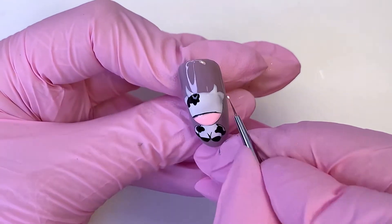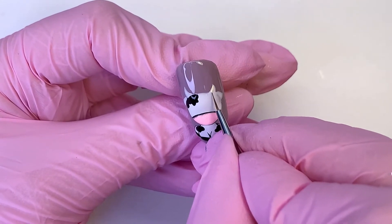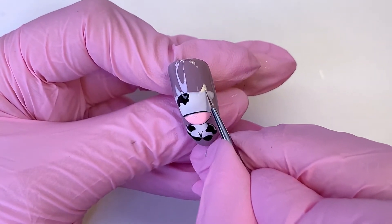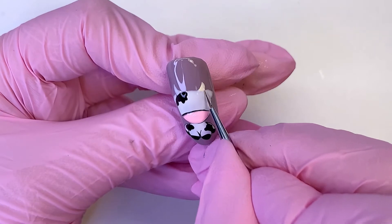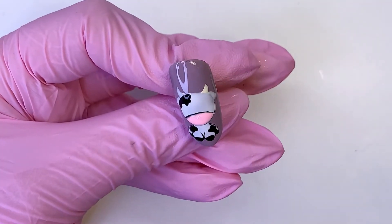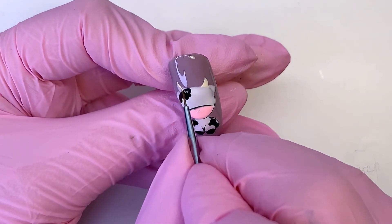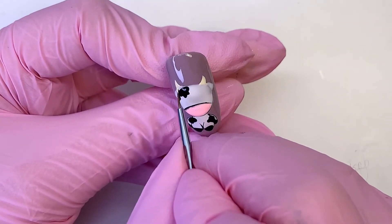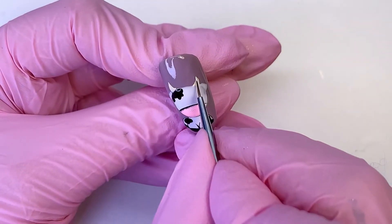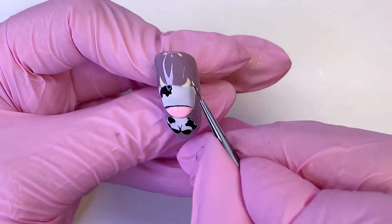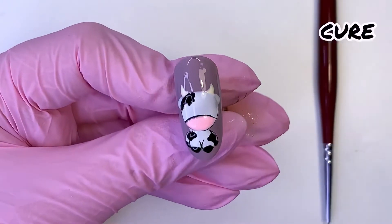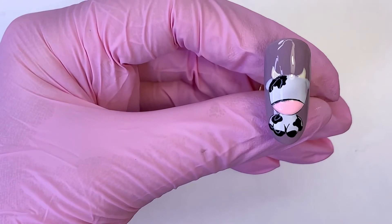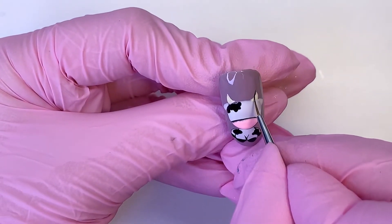Now we will draw the horns. I took a light yellow shade but we can also use brown, I think it will be okay. Add a few more details and outline the horns.